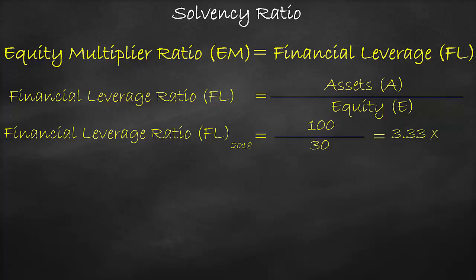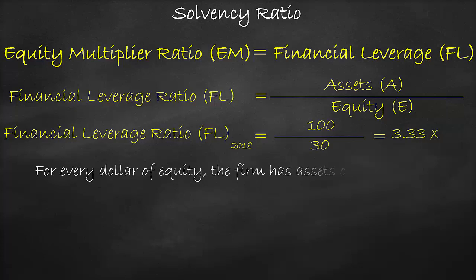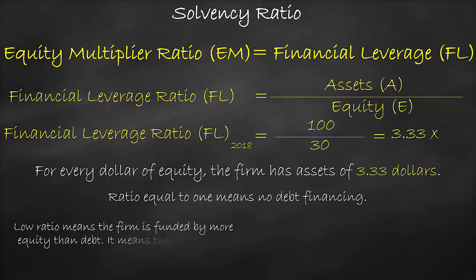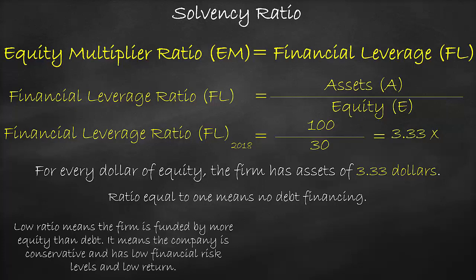This means that for every dollar of equity, the firm has assets of $3.33. A ratio equal to 1 means no debt financing. A lower ratio means that the firm is funded by more equity than debt, and it means that the company is conservative and has a low financial risk level, and consequently a low return.